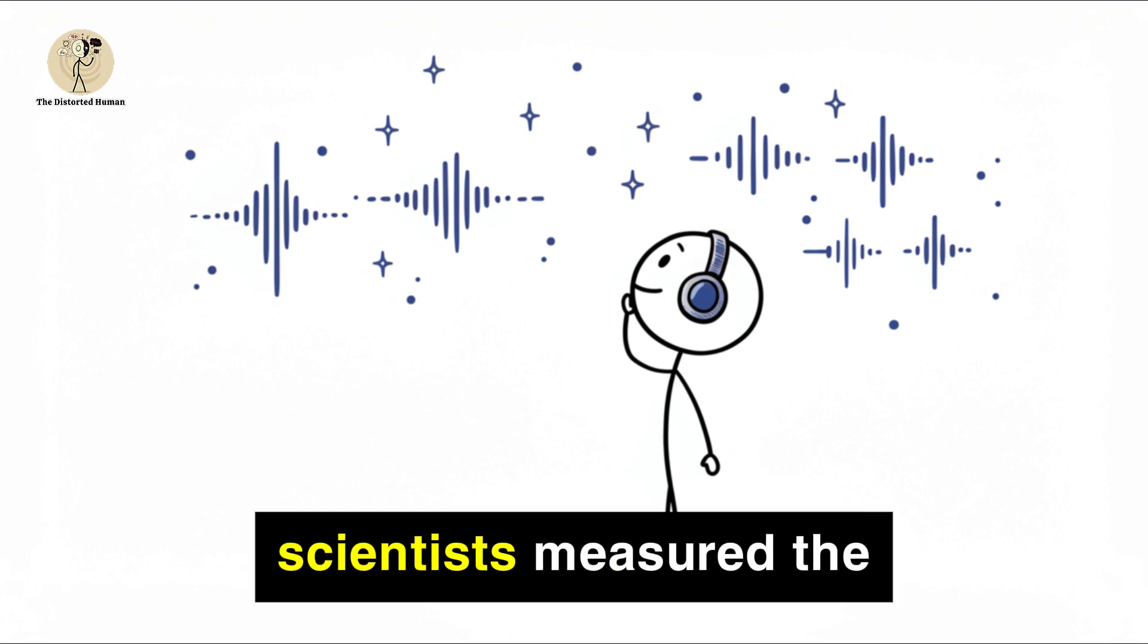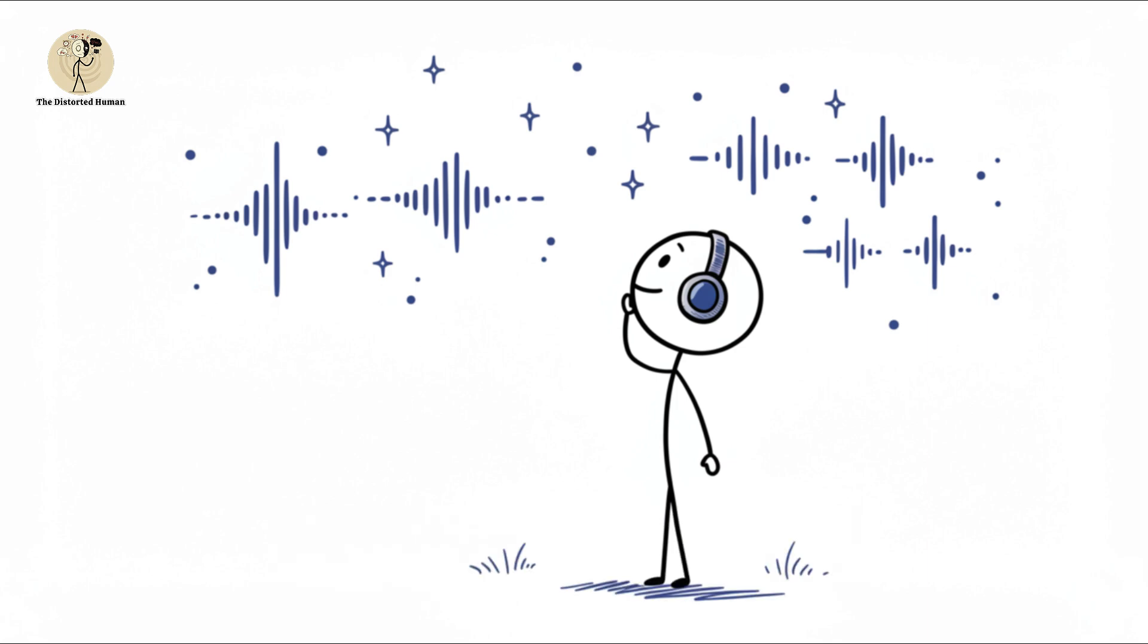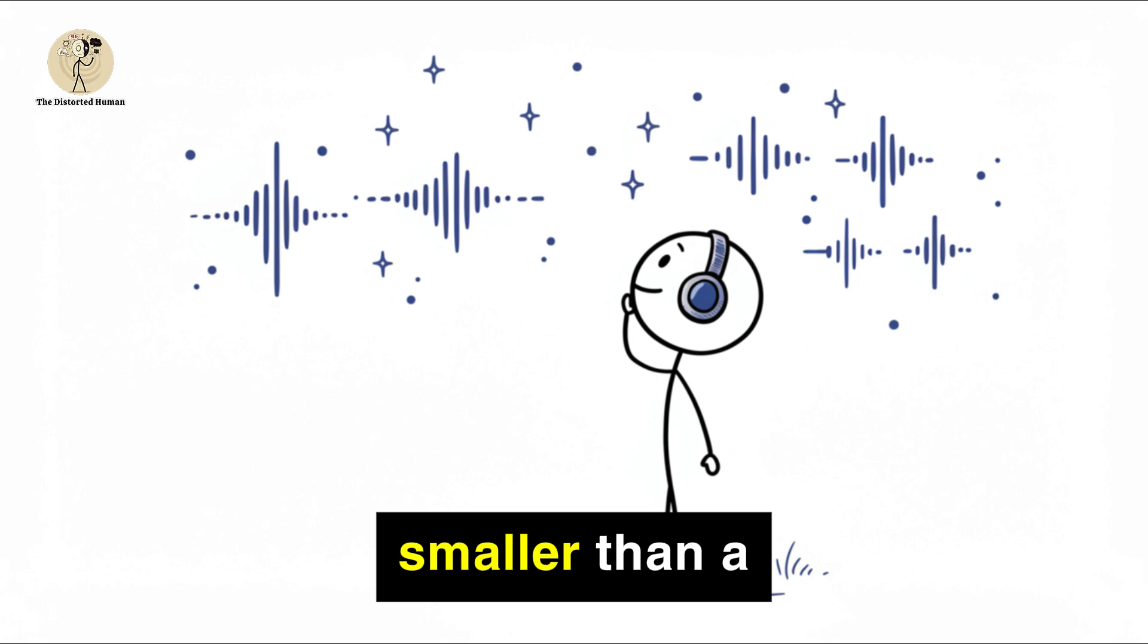Using LIGO, scientists measured the faint tremor of two black holes colliding over a billion light-years away. The distance change they detected was smaller than a proton's width, yet it proved Einstein right.